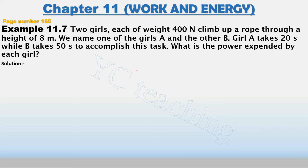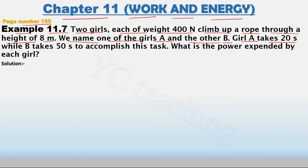Hello everyone. Today we are going to discuss numerical problems of Class 9 Science Chapter 11, i.e. Work and Energy. See page number 155. Example 11.7: Two girls, each of weight 400 Newton, climb up a rope through a height of 8 meters. We name one of the girls A and the other B. Girl A takes 20 seconds while B takes 50 seconds to accomplish this task. What is the power expended by each girl?